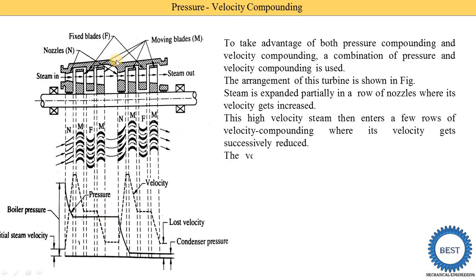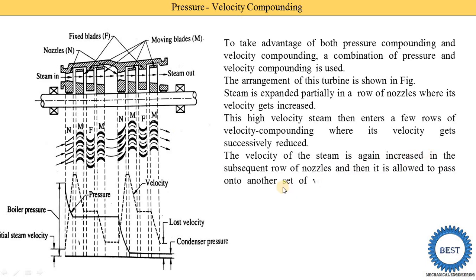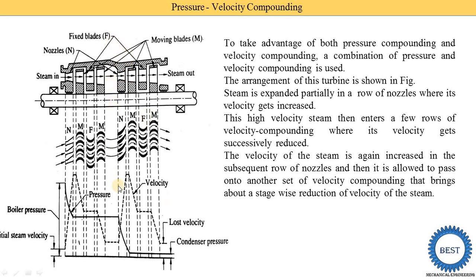Then after, the steam again enters this nozzle. The velocity of the steam is again increased in the subsequent row of nozzles. Here you see the second nozzle: in the second nozzle the velocity increases and the pressure is reduced from partial pressure to condenser pressure. Then it is allowed to pass onto another set of velocity compounding. This again is velocity compounding — we connect the two velocity compoundings in series to achieve the pressure-velocity compounding.